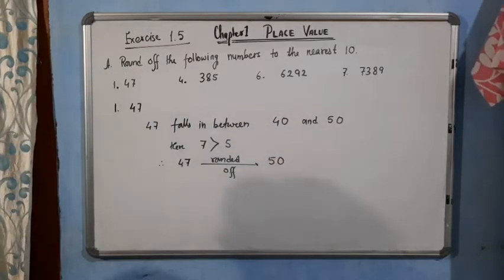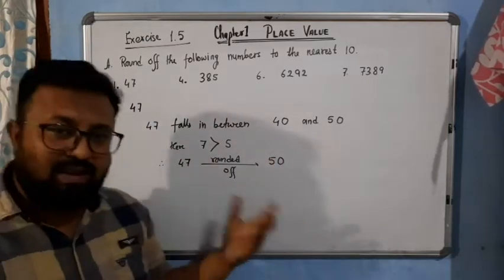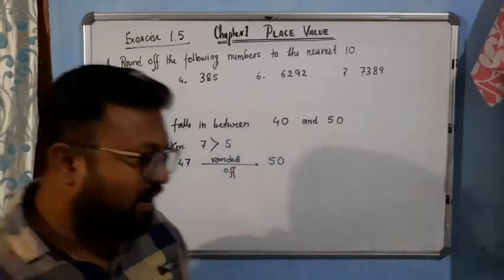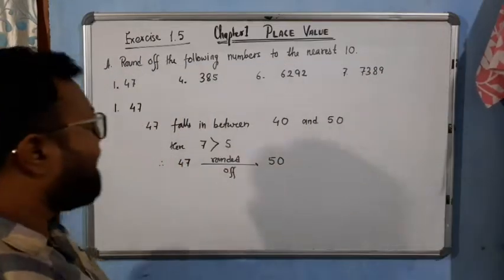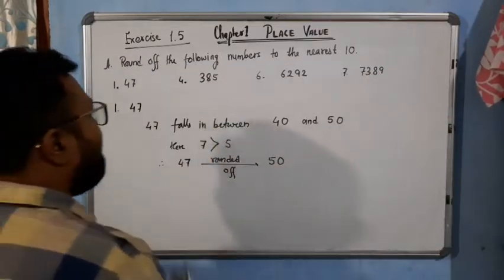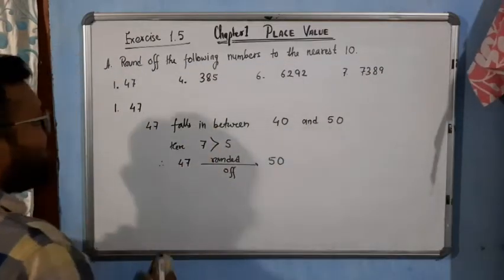47 is rounded off to 50, as I explained in the earlier video. Now let's see the next example.